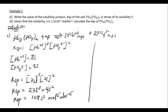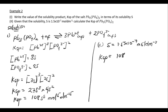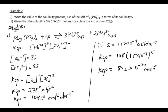Now for part two: the solubility s is given as 1.5 × 10⁻⁷ mol per dm³. Since we derived KSP = 108s⁵, we substitute: KSP = 108 × (1.5 × 10⁻⁷)⁵. Evaluating this on the calculator gives KSP = 8.2 × 10⁻³³ mol⁵ dm⁻¹⁵.